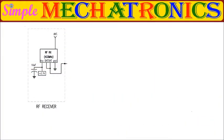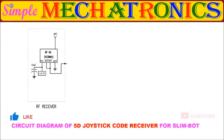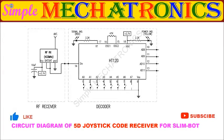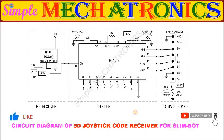There is no change in the receiver circuit diagram. The signal is received by the RF receiver module and sent to HD12D decoder IC. Then the decoded 4-bit code is sent to the baseboard on the slim boat.